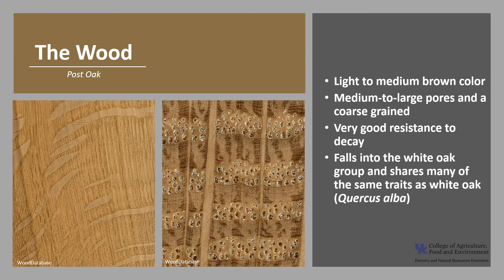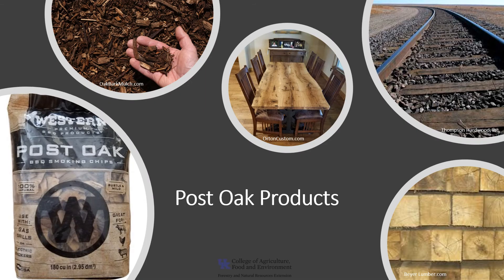Post oak has very good resistance to decay, hence the name post oak being used for fence posts. It falls into the white oak group and shares many of the same traits as white oak, Quercus alba. The wood is used for cabinetry, furniture, interior trim, and flooring — many of the same things white oak is used for. The wood is also used for railroad ties, construction timber, wood chips for smoking meats, and for fence posts. The bark is also used as a decorative and protective mulch in landscaping.